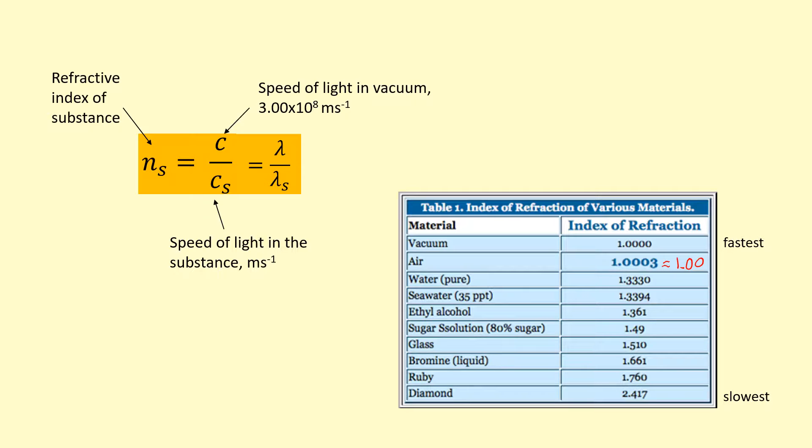At the bottom, we've got diamond, which has slowed the light down the most. So that's going to have the largest impact in terms of change in direction, because it's slowing it down so much. These numbers here, the refractive index, cannot be smaller than 1, because light is going to be the fastest in vacuum, and all substances are going to be slower.